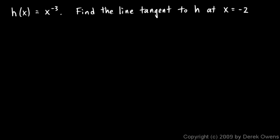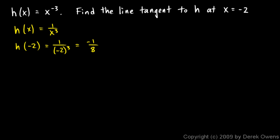Let's find the point. H of x is 1 over x cubed, and so h of negative 2 is 1 over negative 2 cubed, which is just negative 1 over 8. So that gives us our point. The x value is negative 2, and the y value is negative 1 eighth.